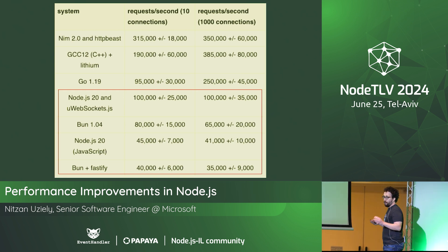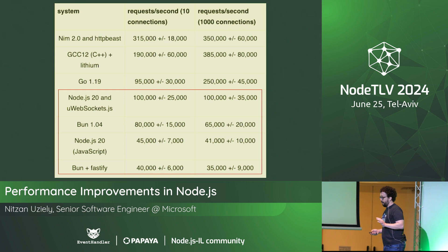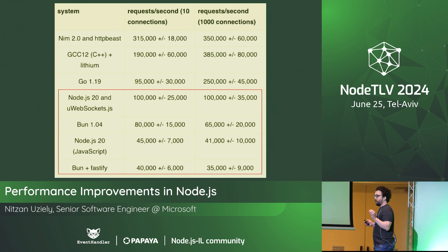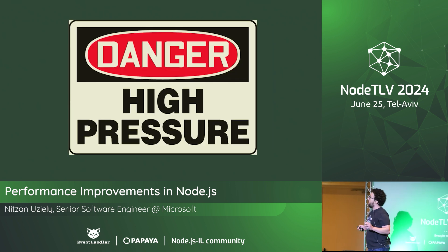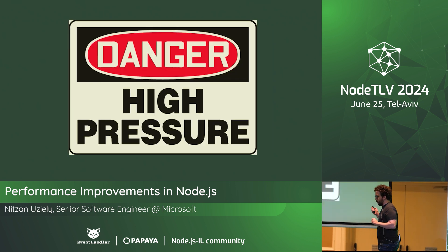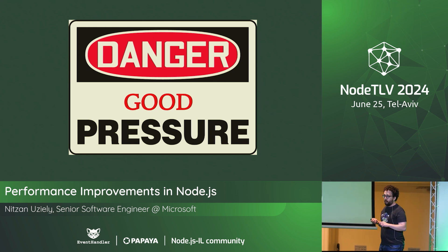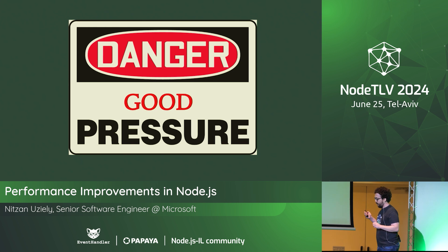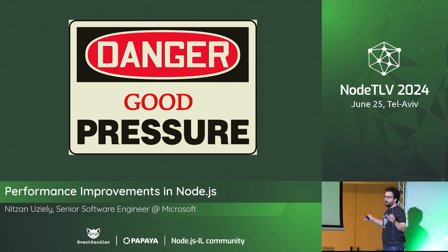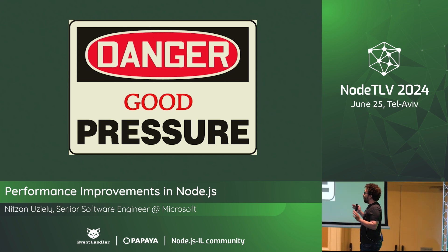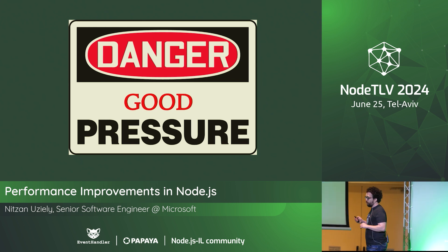I'm part of the Node.js core team, so I'm going to tell you that Node is great — maybe you shouldn't believe me. What I'm saying is these benchmarks are also a bit stale. What matters is that we've got pressure on the Node.js team to increase performance. This is good, because we've seen this before: when Deno was created, there was pressure to add fetch and standards. When Yarn was created, suddenly NPM needed performance. Competition creates good pressure.